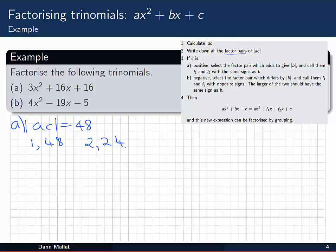Now we want all the factor pairs of that. So we have 1 and 48, 2 and 24, 3 and 16, 4 and 12, and 6 and 8.